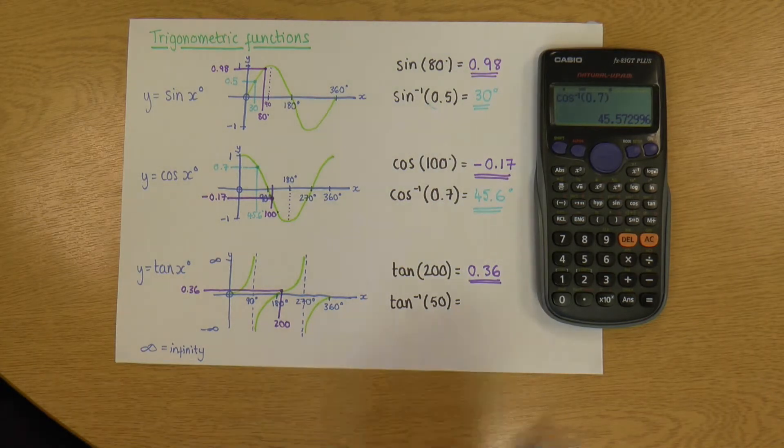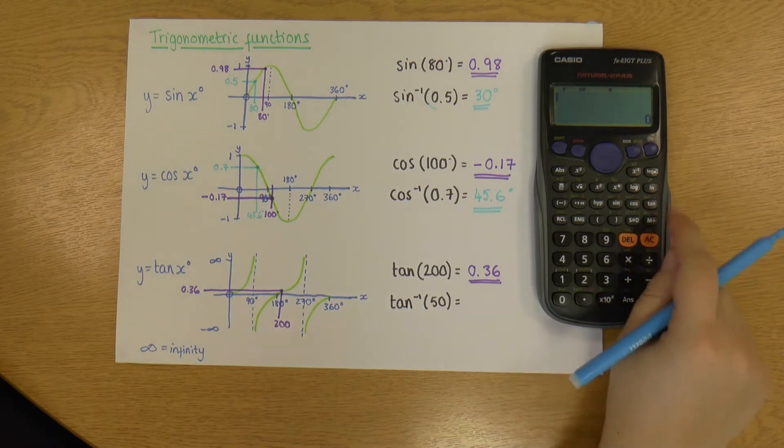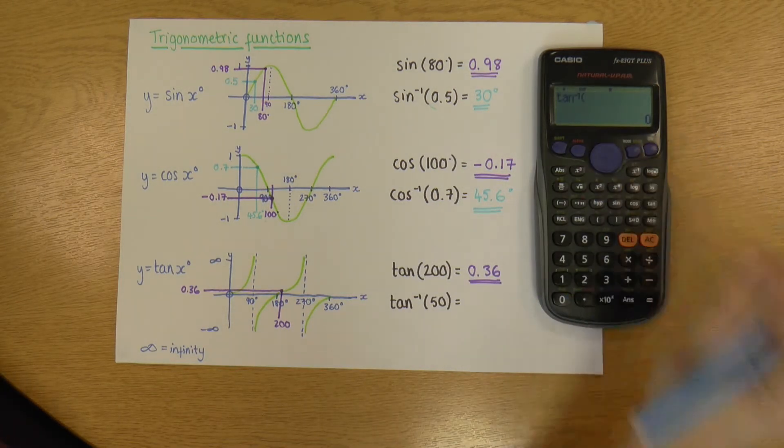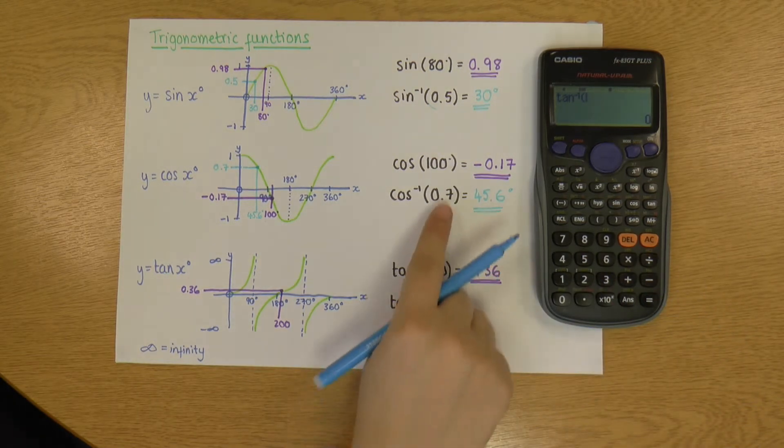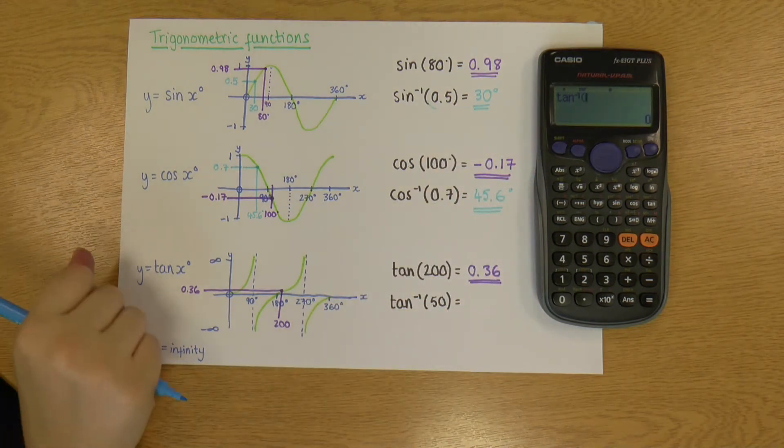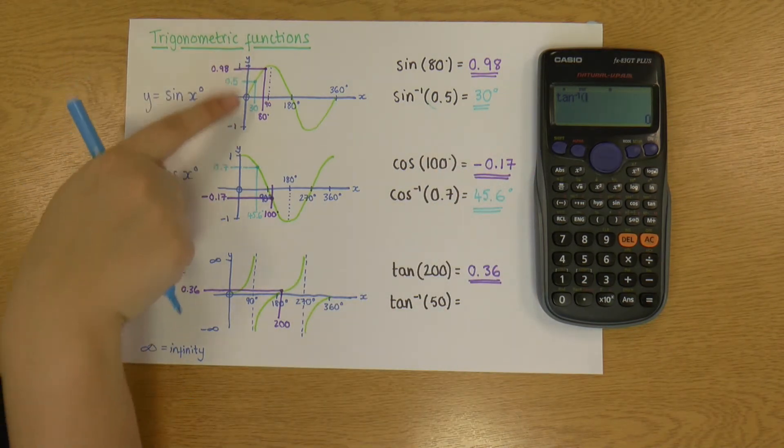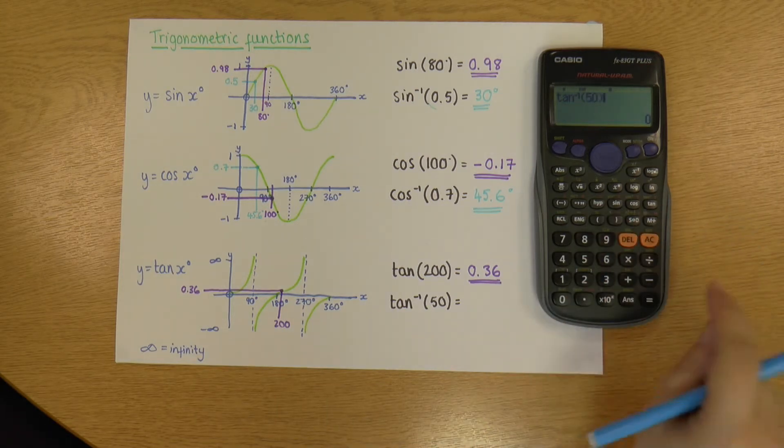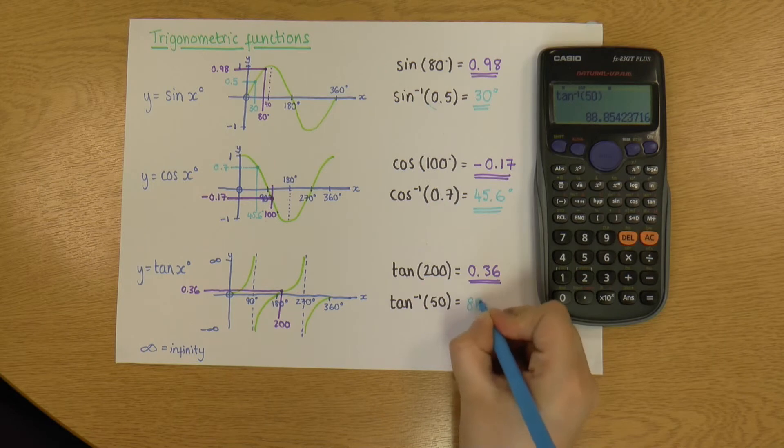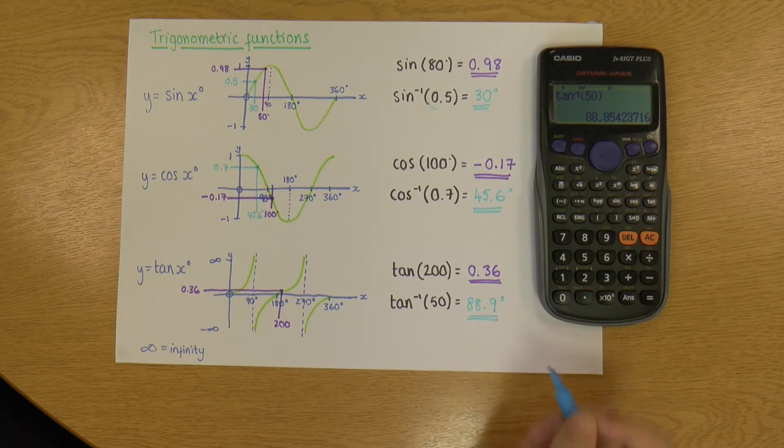Okay, and now this last one, you know the drill by now. Pop it into a calculator. So shift, tan, to give me tan⁻¹. And this one, you'll notice that my number's much bigger. So in sine and cos, I can only have a number between 1 and minus 1, because that's how far my y-axis extends. With tan, I can have any number between infinity and minus infinity. So any number at all. So in this, I'm being asked to find tan⁻¹ of 50. And I get 88.9.